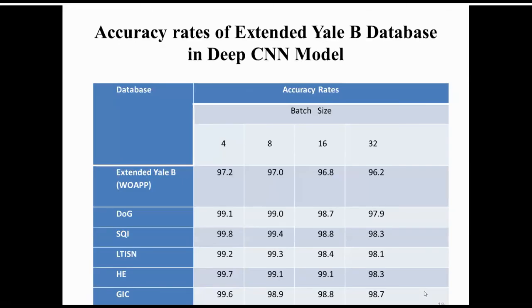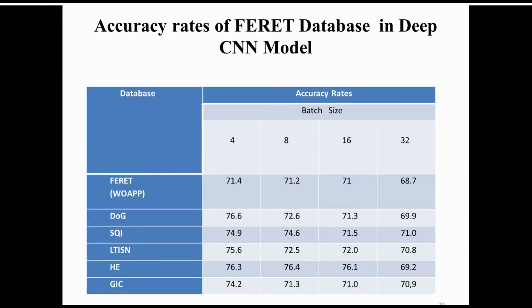Looking at accuracy rates for the Extended Yale database by batch size, the accuracy of 99.8% was achieved with a batch size of 4. As the batch size increases, the accuracy decreases. For the FERET database, the best accuracy of 76.6% was also achieved with a batch size of 4, and accuracy again decreases as batch size increases.